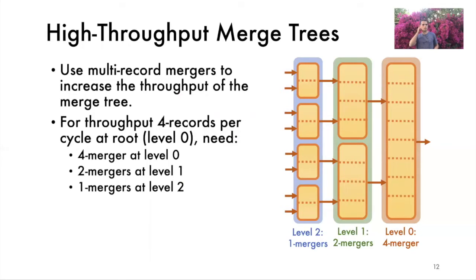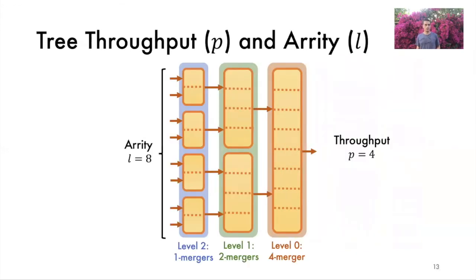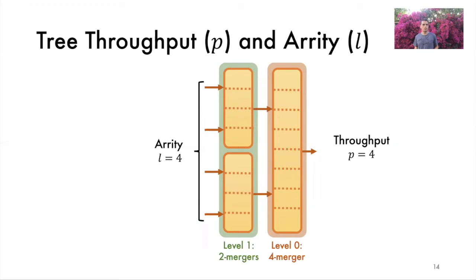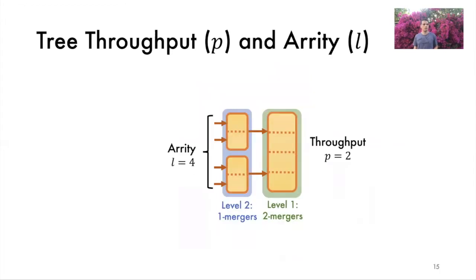We can use multi-record mergers to increase the throughput of merge trees. Specifically, looking at the figure on the right, we can construct the tree that outputs four records per cycle if we put one four-merger at the root of the tree, two two-mergers at the level below it and four one-mergers at the leaves. In general, the throughput of the tree will be equal to the throughput of the merger at its root. We denote the tree throughput with the lowercase p. So as explained in the previous slide, the tree in this example has throughput p equals four and an arity of l equals eight. As an example, if we remove level two from the tree, the arity drops to l equals four while the throughput is still equal to four. If we now change the mergers at level one from two-mergers to one-mergers and the merger at level zero from a four-merger to a two-merger, the tree throughput p drops to two while the arity is unchanged.